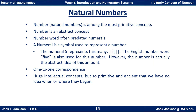Number words often predate numerals in cultures. A numeral is a symbol, a physical representation, to represent a number, which is an abstract concept. For example, the numeral right here — this one — represents this many, the same as the number of fingers on one hand. The English number word 'five' is also used for this number, and of course there are number words in other languages for the same number. However, the number is actually the abstract idea of this amount.